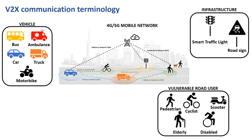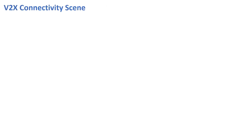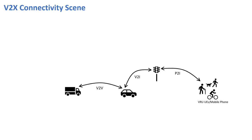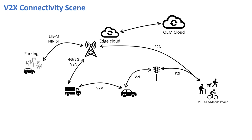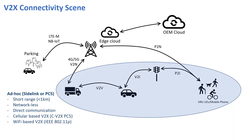The mobile network can be 4G, 5G, or beyond. For short-range communication, vehicles and other road users often use direct communication in an ad hoc manner, whereas for long-range communication or IoT applications they rely on 4G and 5G cellular networks. Ad hoc V2X communication, also known as C-V2X sidelink or PC5, is short-range direct communication for distances under one kilometer.